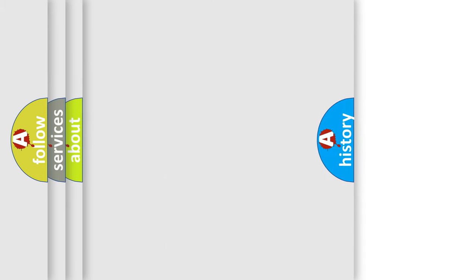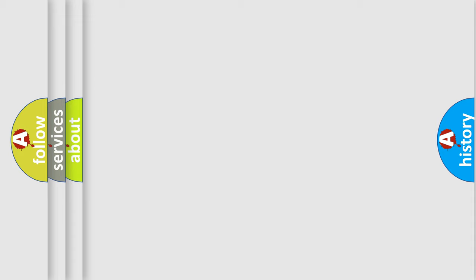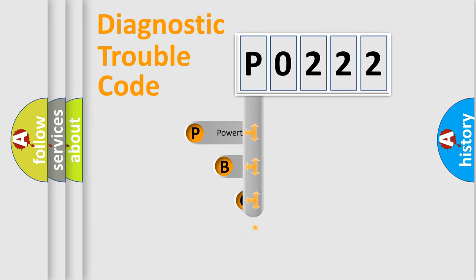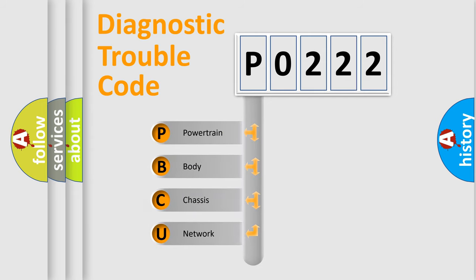Today we will find answers to these questions together. Let's do this. First, let's look at the history of diagnostic fault code composition according to the OBD2 protocol, which is unified for all automakers since 2000.